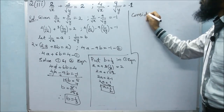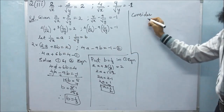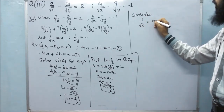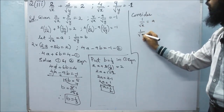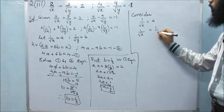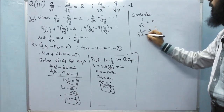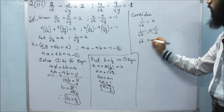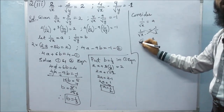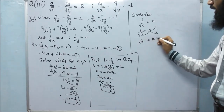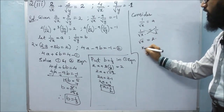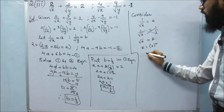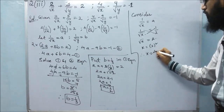Next, consider 1 by root x equals A. So 1 by root x equals 1 by 2. Cross multiplying, we get root x equals 2. Removing the square root by squaring both sides, x is equals to 2 squared, therefore x is equals to 4.